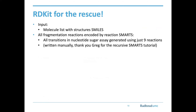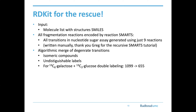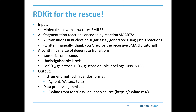Thank you for the SMARTS tutorial you wrote some years back — it was really helpful. The tool also has some logic to merge transitions because sometimes compounds are isomeric and you don't want to put two degenerate acquisition channels in the instrument; some labels are indistinguishable. This can decrease the number of potential transitions by approximately half in a worst-case scenario. As output we basically have an instrument-ready method in vendor format — you start with SMILES structures and end up with the acquisition method.